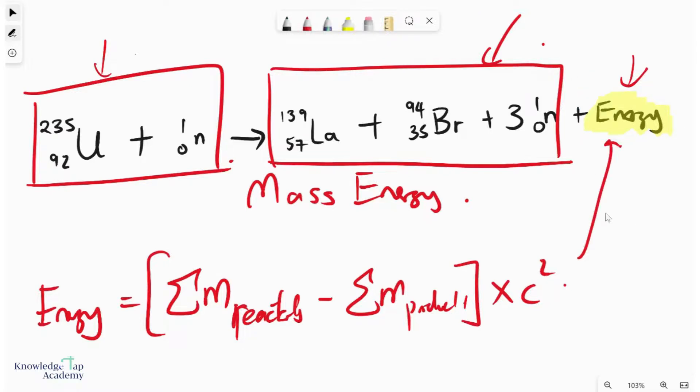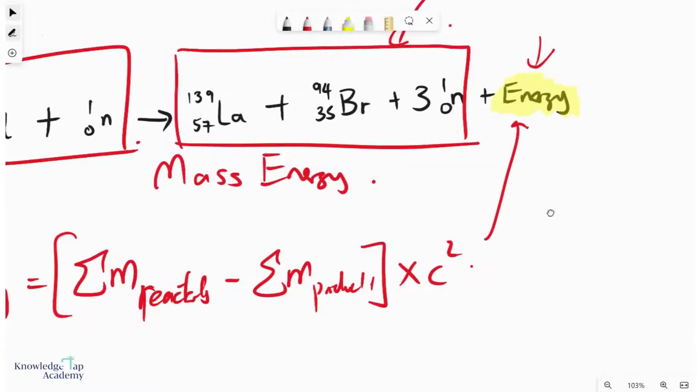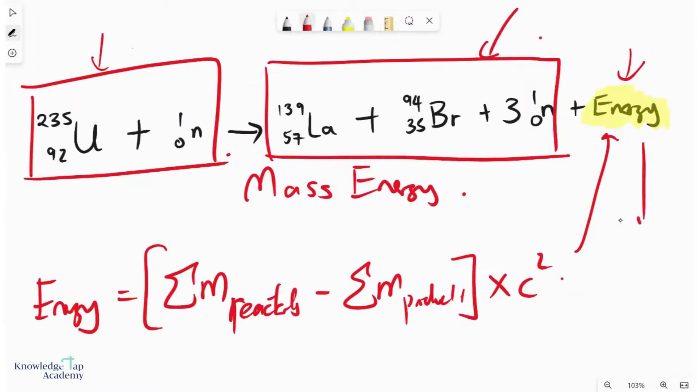This energy is typically released most commonly in the form of kinetic energy of the products, and also significantly as gamma radiation.